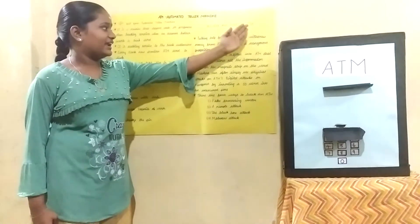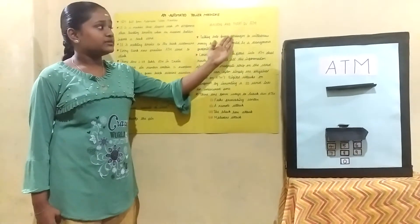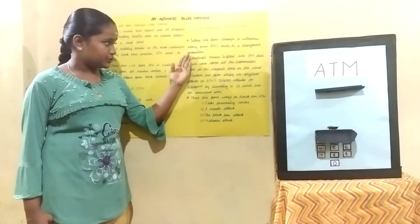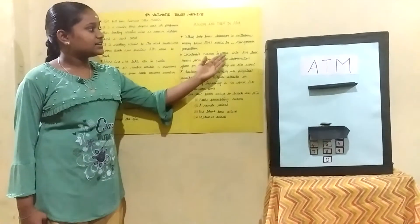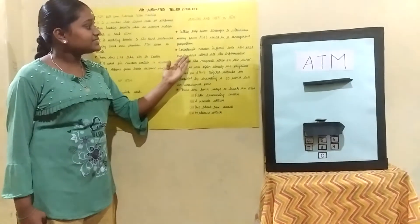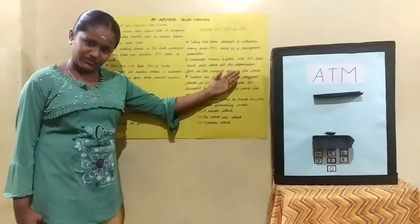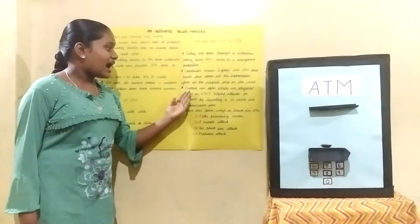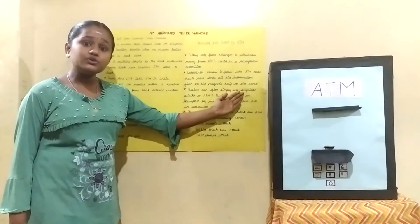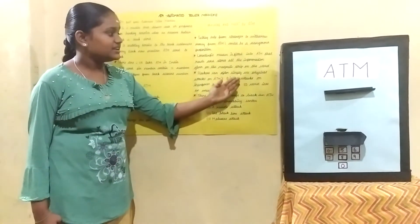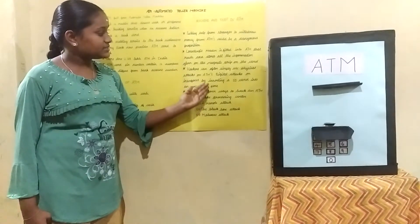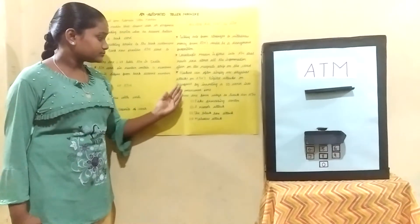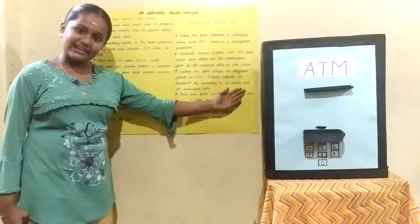Mission and theft in ATM — seeking help from strangers to withdraw money from an ATM could be dangerous. A counterfeit reader is fitted into an ATM that reads and stores all the information given on the magnetic strip on the card. Hackers can often use physical attacks or digital attacks on the interface by inserting an SD card into an unsecured port. There are 4 ways to hack an ATM.